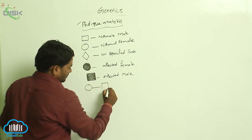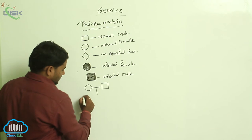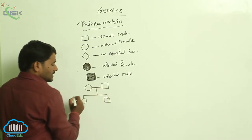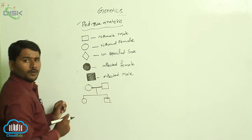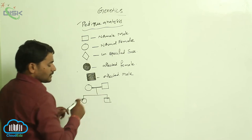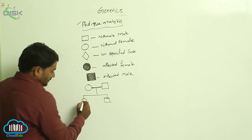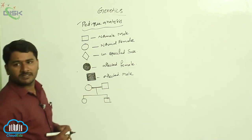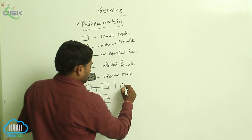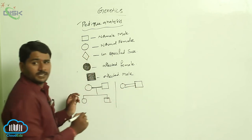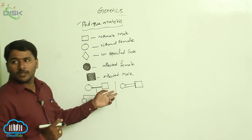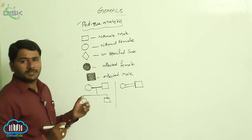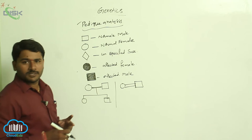This symbol represents the crossing between two different individuals — one normal female and one normal male — showing two daughters to the parents. This other symbol indicates a cross between closely related individuals, that is, consanguineous mating.